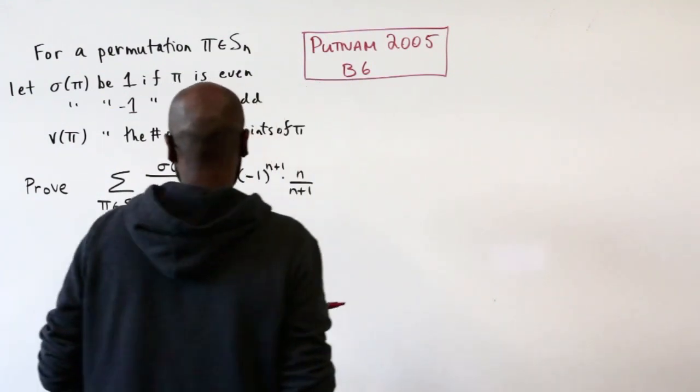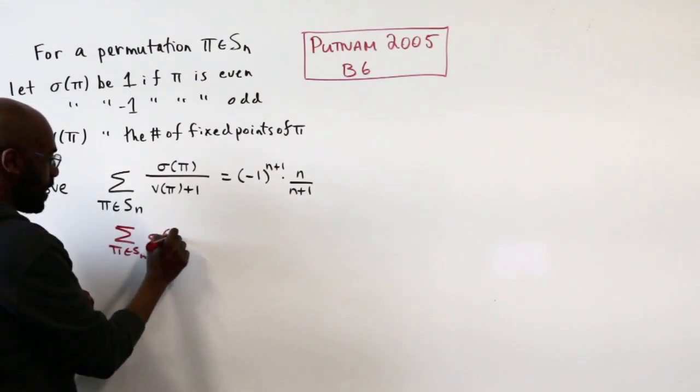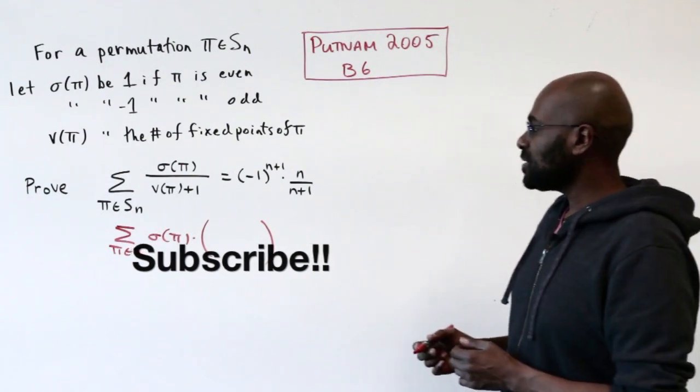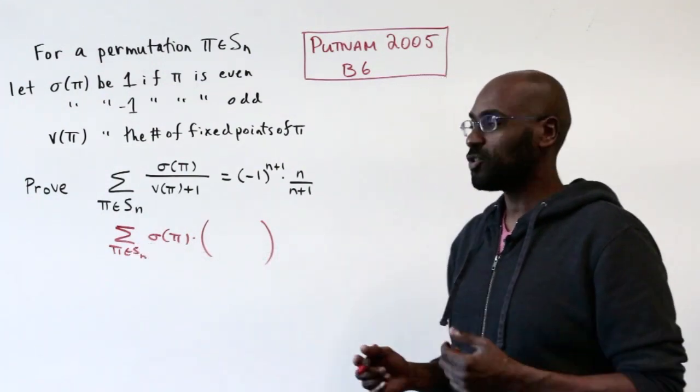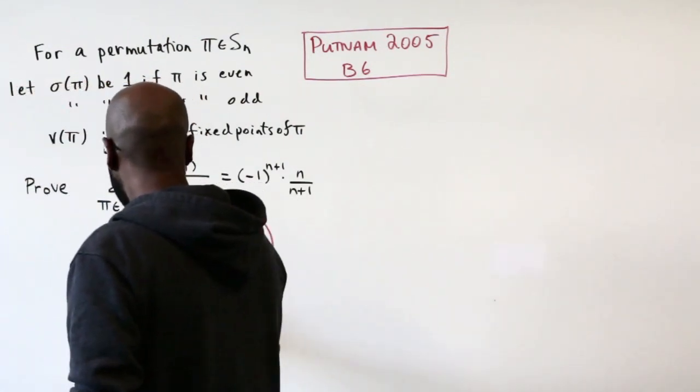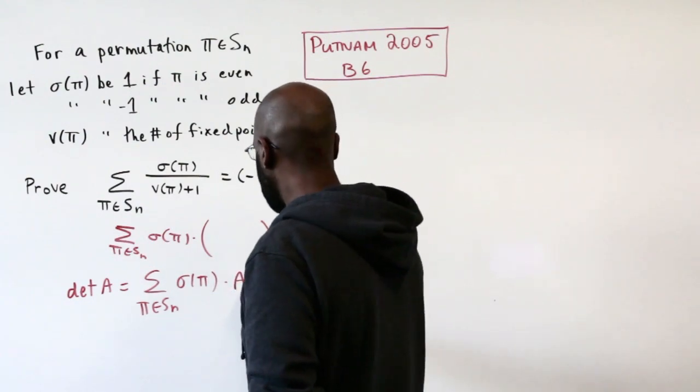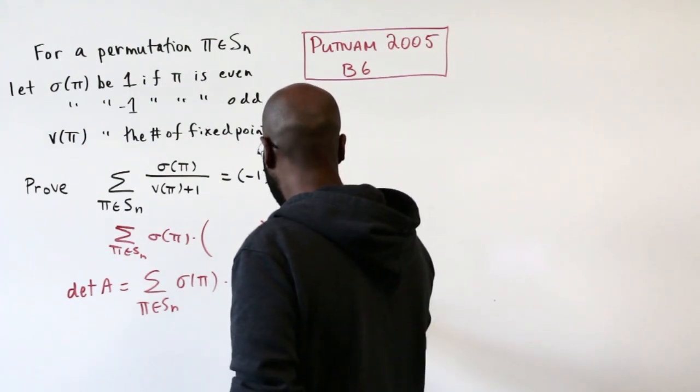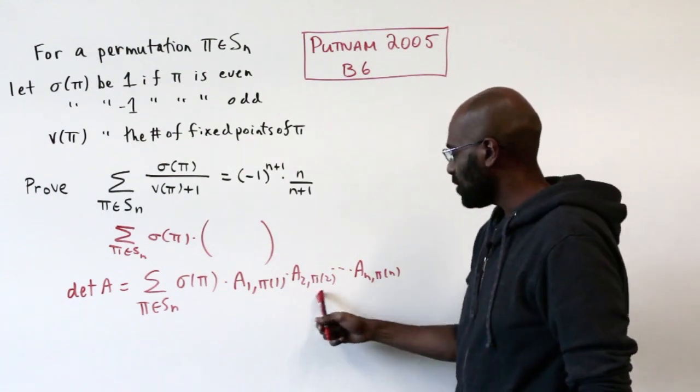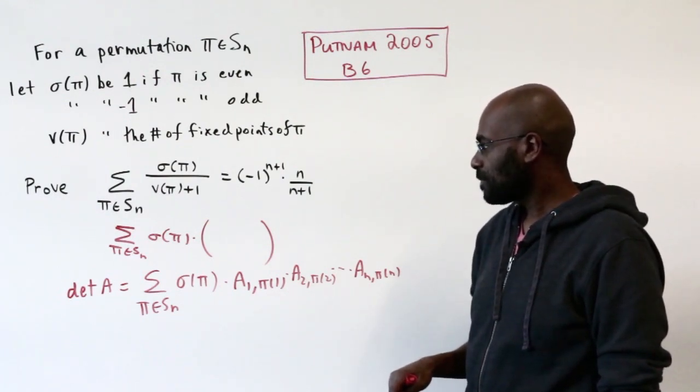The first observation is that we're summing over π in Sn of σ(π) times some quantity. This looks reminiscent of the permutation definition for the determinant of a matrix. The determinant of any matrix is a sum over all permutations in Sn of σ(π) times a₁π₁, a₂π₂, times anπn. This is a product of n entries of matrix A, where the specific entries you pick are governed by π.